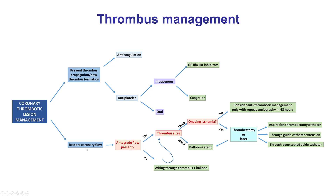The next and main step is to restore coronary flow. In this particular case, we did not have antegrade flow. Therefore, the first step is to advance a guide wire through the thrombus. Sometimes if there is no ongoing ischemia, observation with ongoing antithrombotic management could help dissolve some of the thrombus and facilitate subsequent PCI.